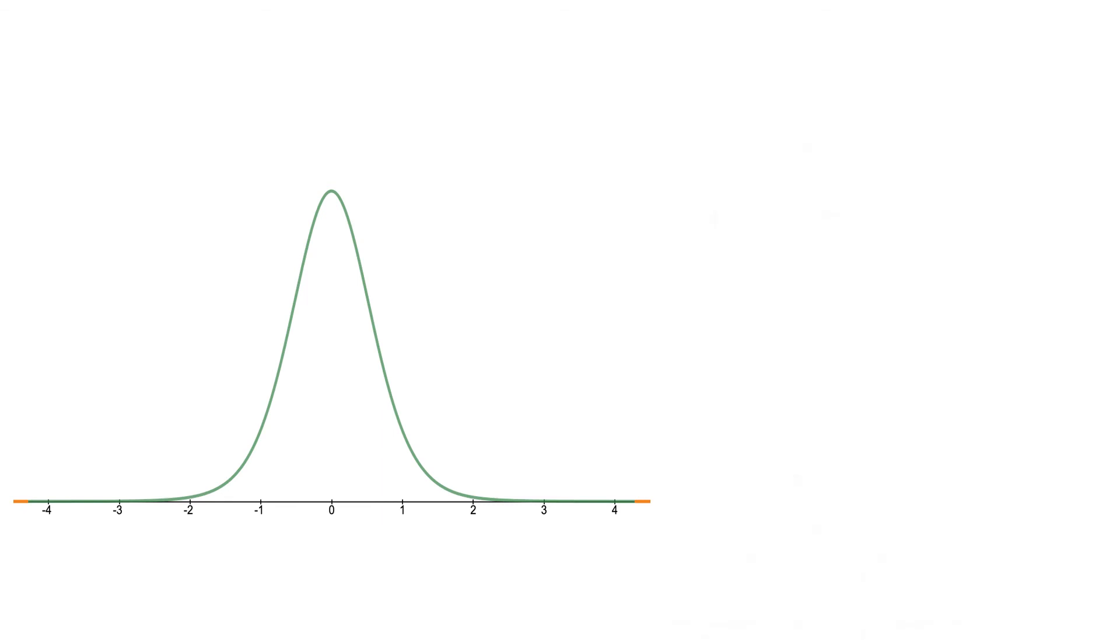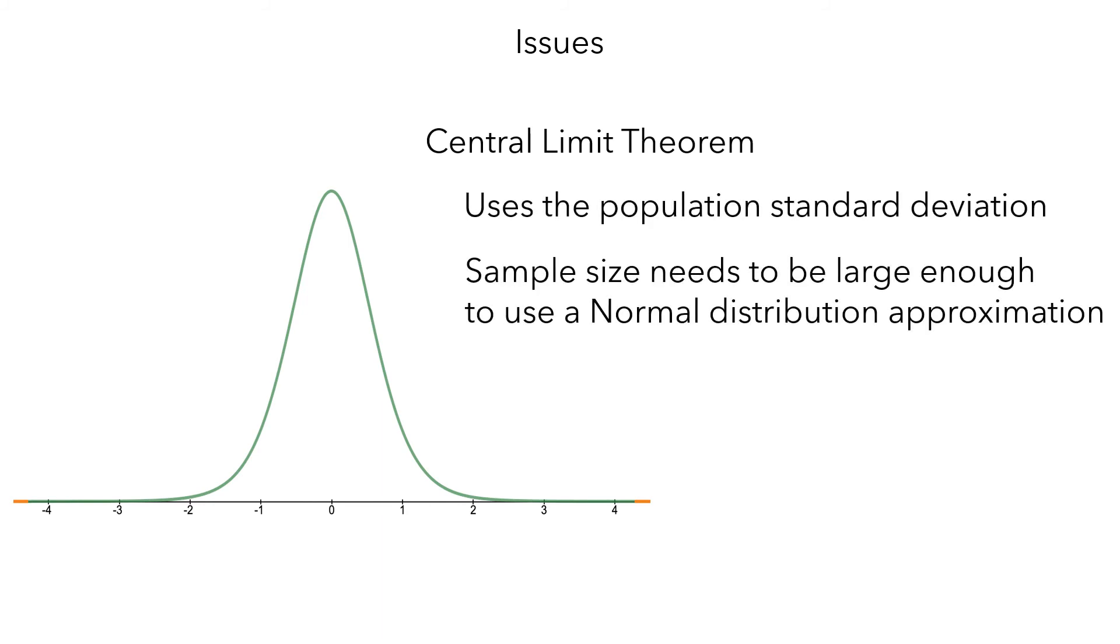Now, remember the two issues we identified a couple of minutes ago? That central limit theorem uses the population standard deviation, which we don't know, and that the sample size needs to be large enough to use a normal distribution approximation. Well, the first issue was addressed by using a t-distribution. But we haven't completely resolved the second issue. How large is large enough?